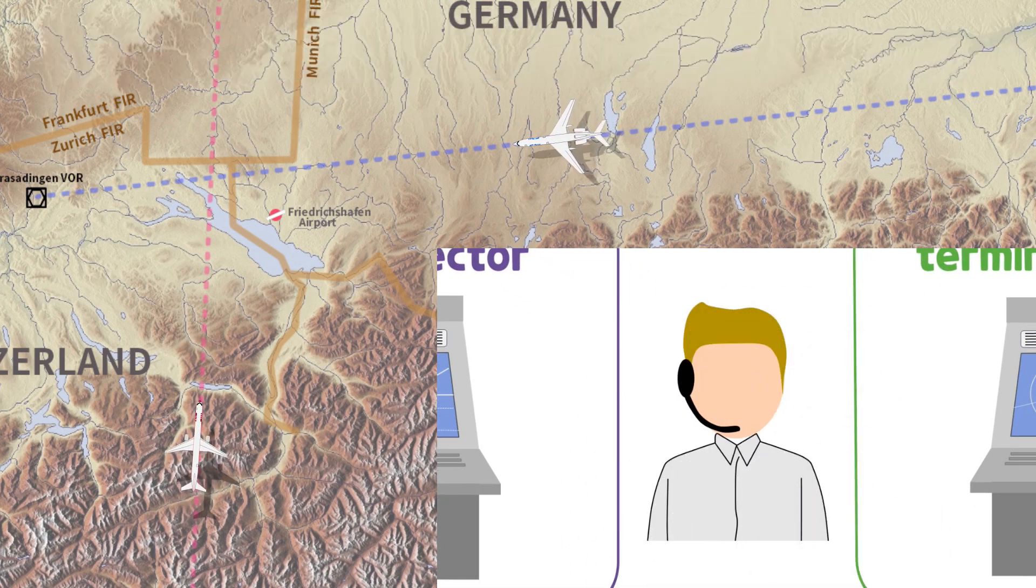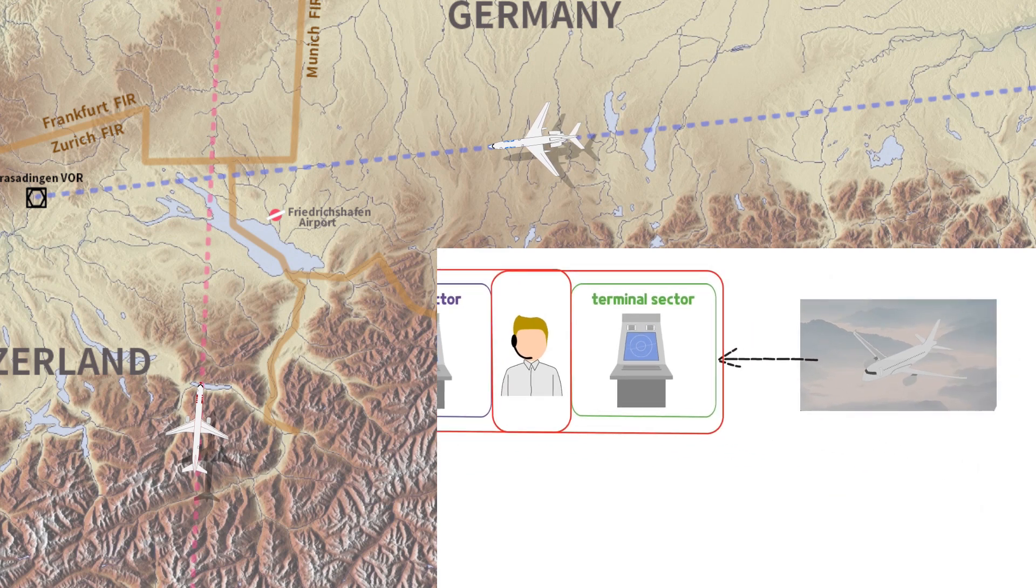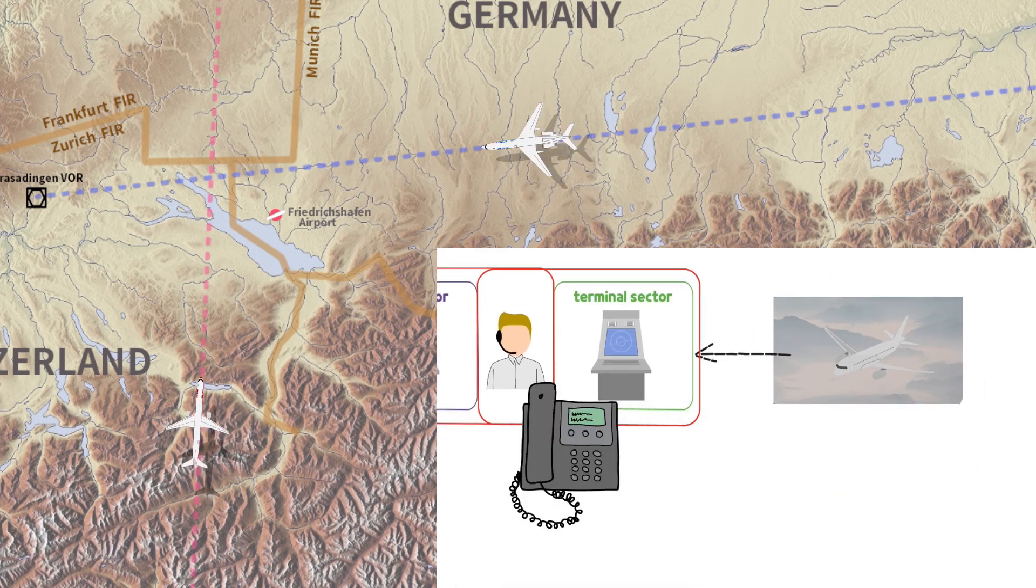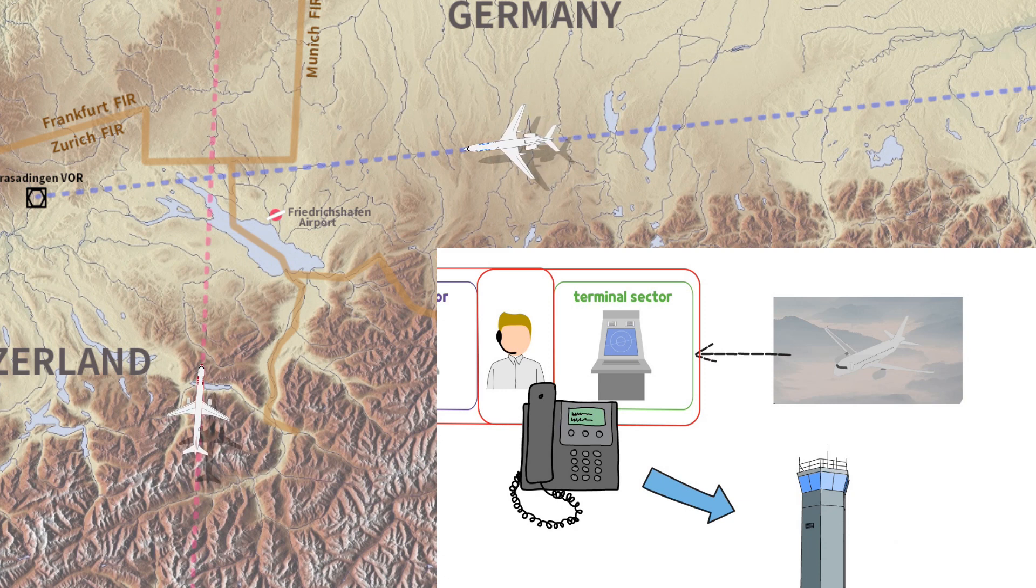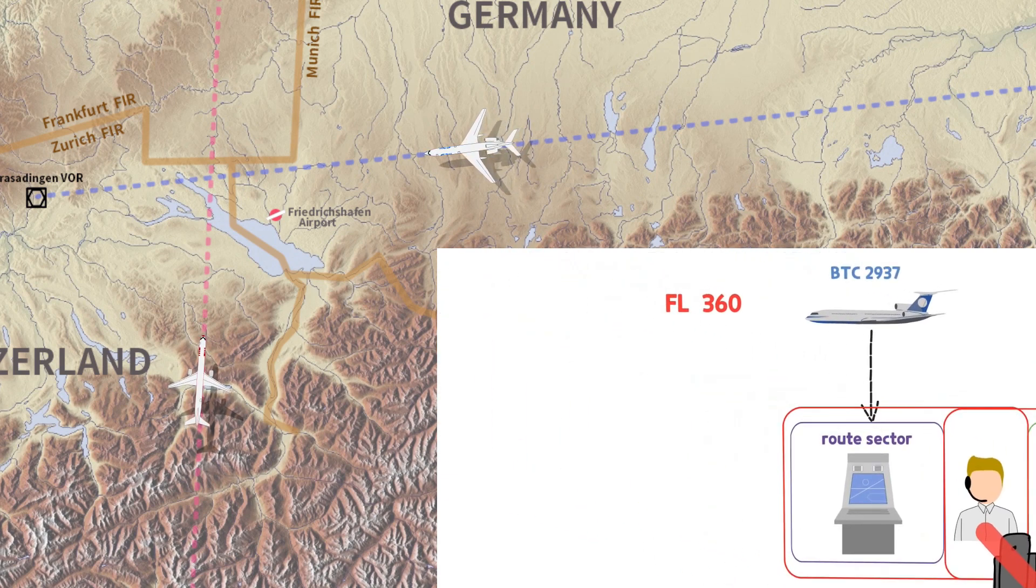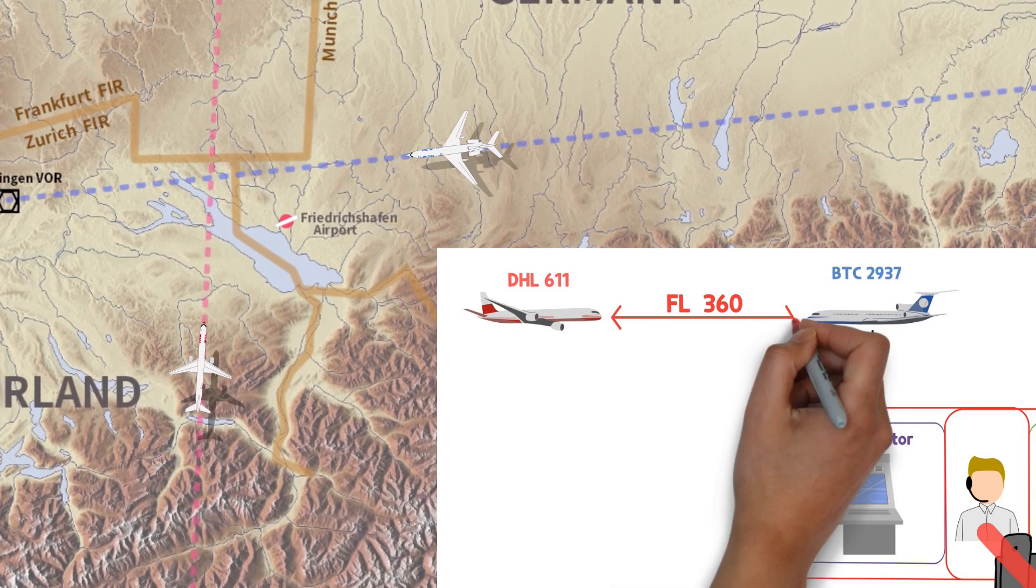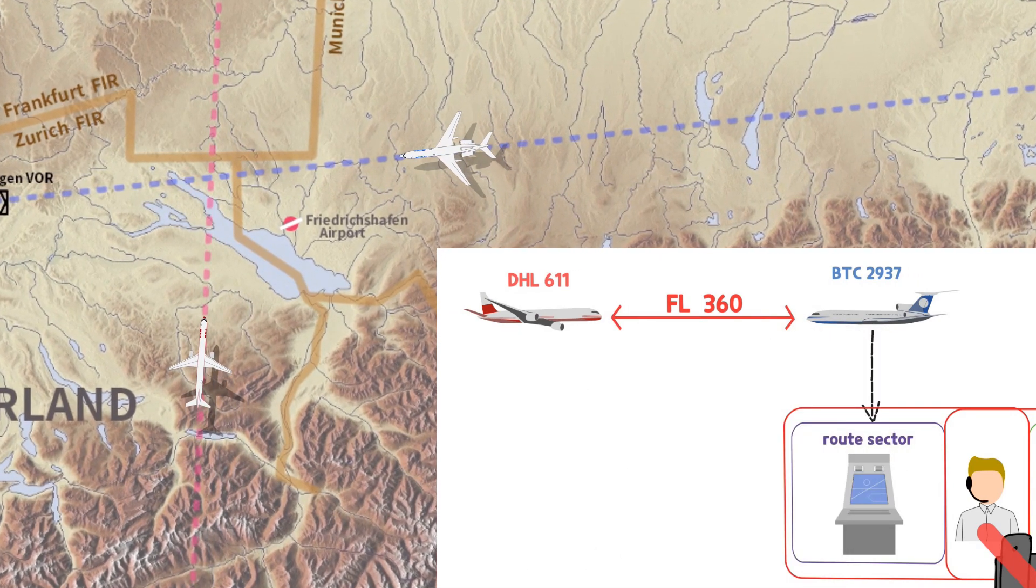One controller remaining in the control room started to control the ACC area with the left console, and the approach control with the right console. The controller made a phone call to the Friedrichshafen tower to inform the AEF-1135's landing information. However, due to the technical work of the Zurich ACC telephone system, the controller was unable to contact the Friedrichshafen control tower. The controller did not notice that DHL-611 and BTC-2937 were heading to the same point at the same altitude.